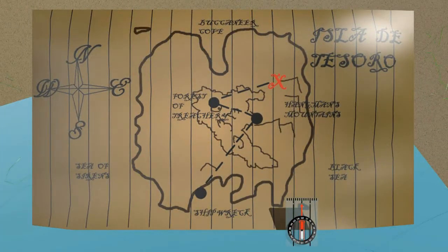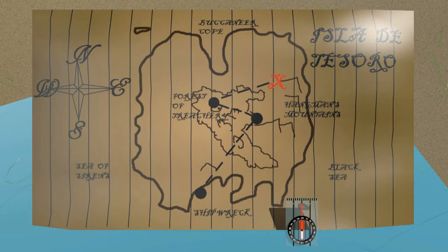Orienteering is the practice of using a compass and a map to orient ourselves and move from one location to a specific destination.